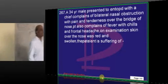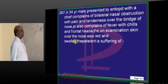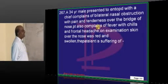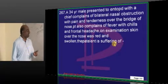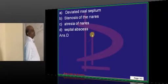34-year-old with bilateral nasal obstruction and tenderness over the bridge of the nose, complains of fever with chills with frontal headache. Infection is also there. That is suggestive of septal abscess.